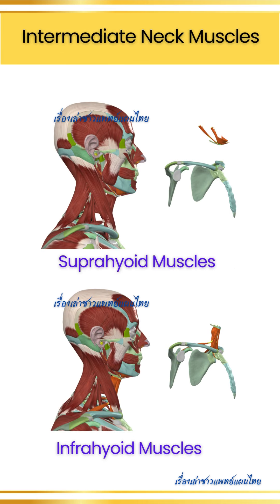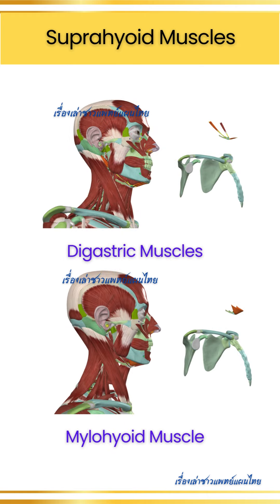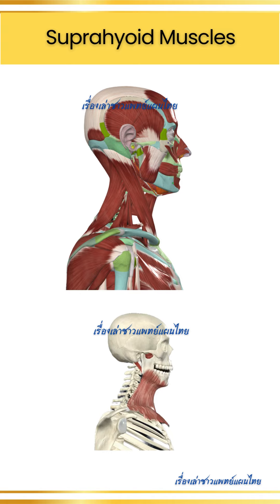Two: intermediate neck muscles. These include the suprahyoid and infrahyoid muscles, which connect the hyoid bone and aid in functions like swallowing, tongue movement, and speech. Suprahyoid muscles, located above the hyoid bone, include the digastric, mylohyoid, stylohyoid, and geniohyoid muscles. These muscles help elevate the hyoid bone and tongue during swallowing and speech.